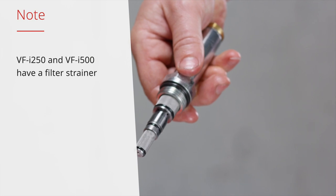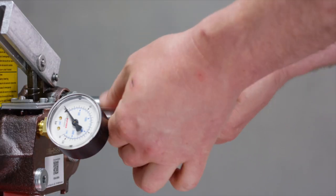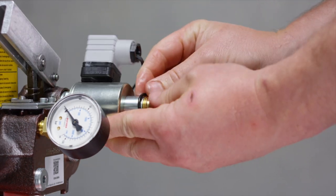Replace second filter strainer analog to the previous one. Reinstall the pilot valve, including solenoid coil, in the starting position.